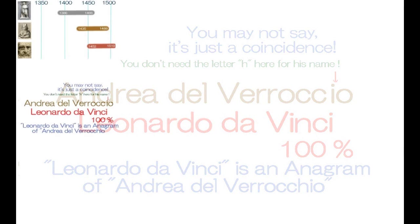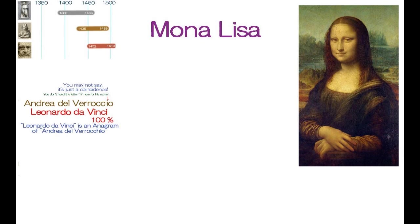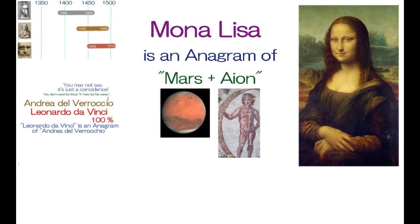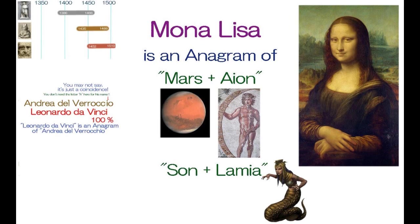I, Hiroshi Hayashi, understand that the name of Mona Lisa is an anagram in three ways. One is Mars and Iron. Another is Son of Lamia or Son of Maria. And Maria is an anagram of Lamia, or vice versa.